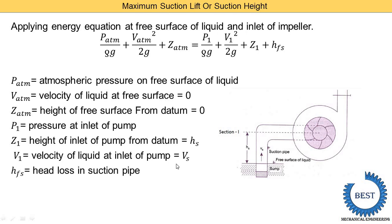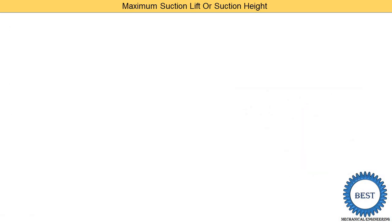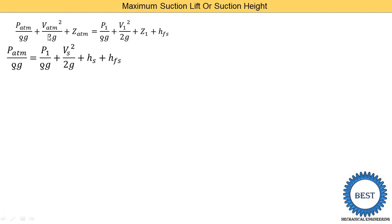hfs is the head loss in the suction pipe. Putting all these values into the equation: v_atmosphere is zero, z_atmosphere is zero, v1 is replaced by Vs, and z1 is replaced by Hs.